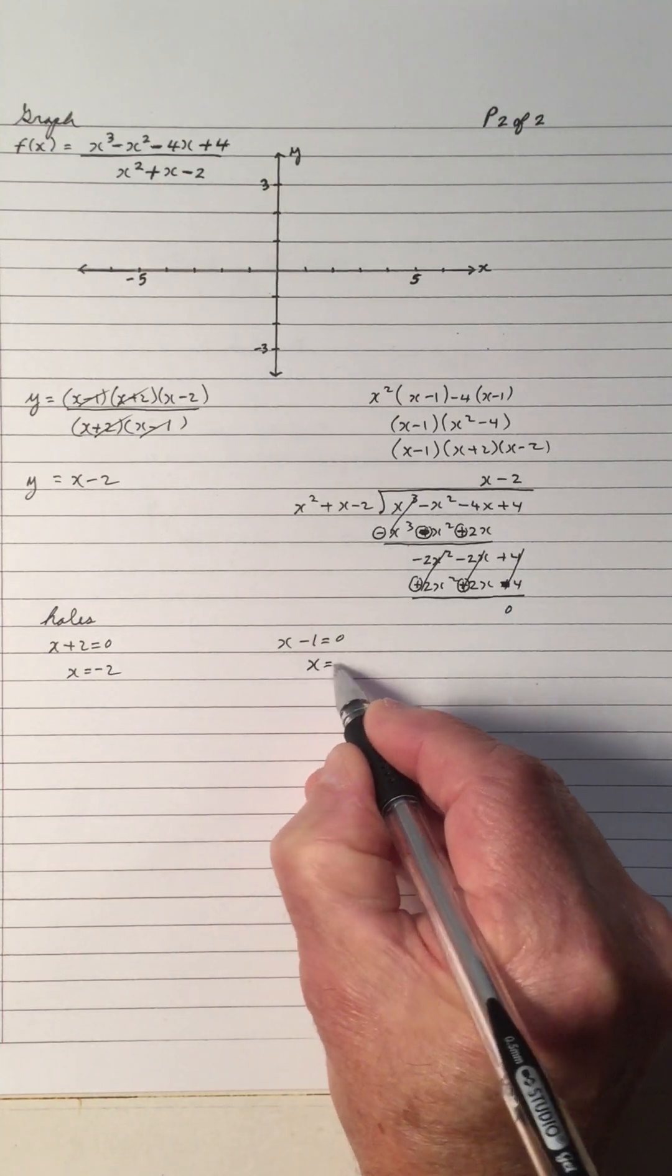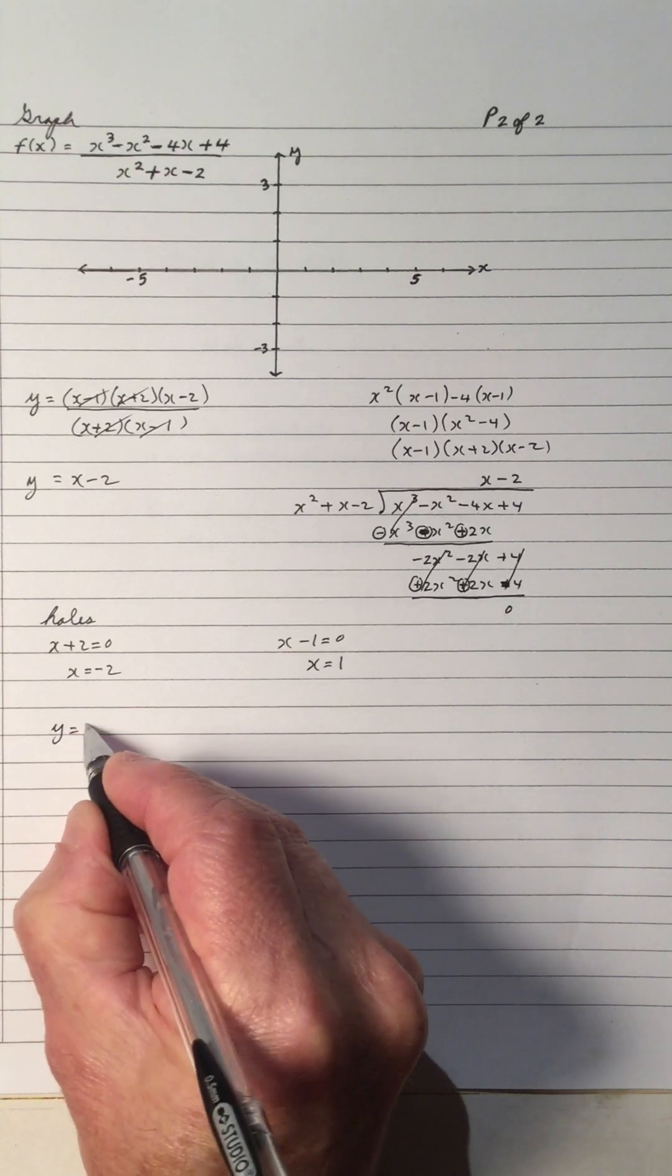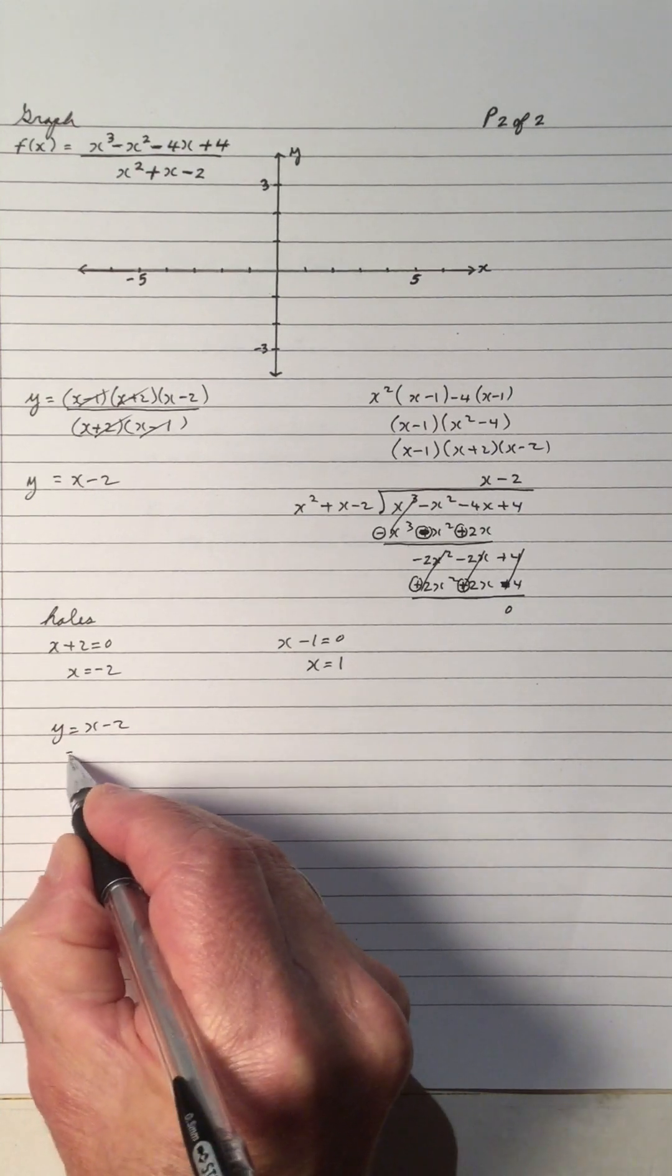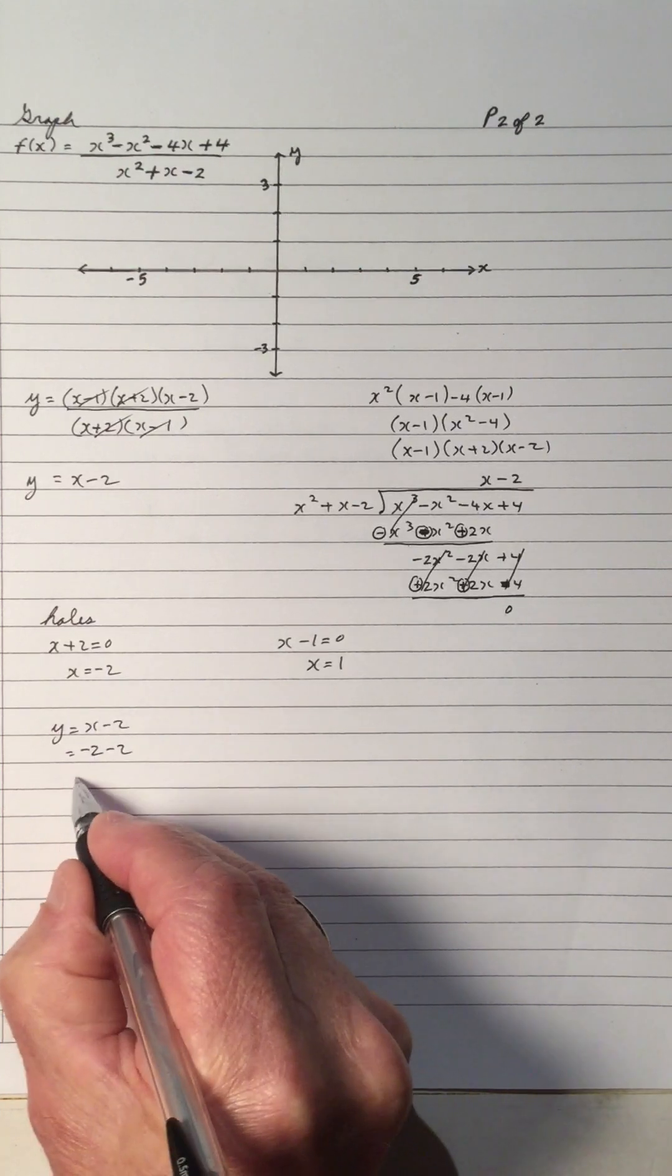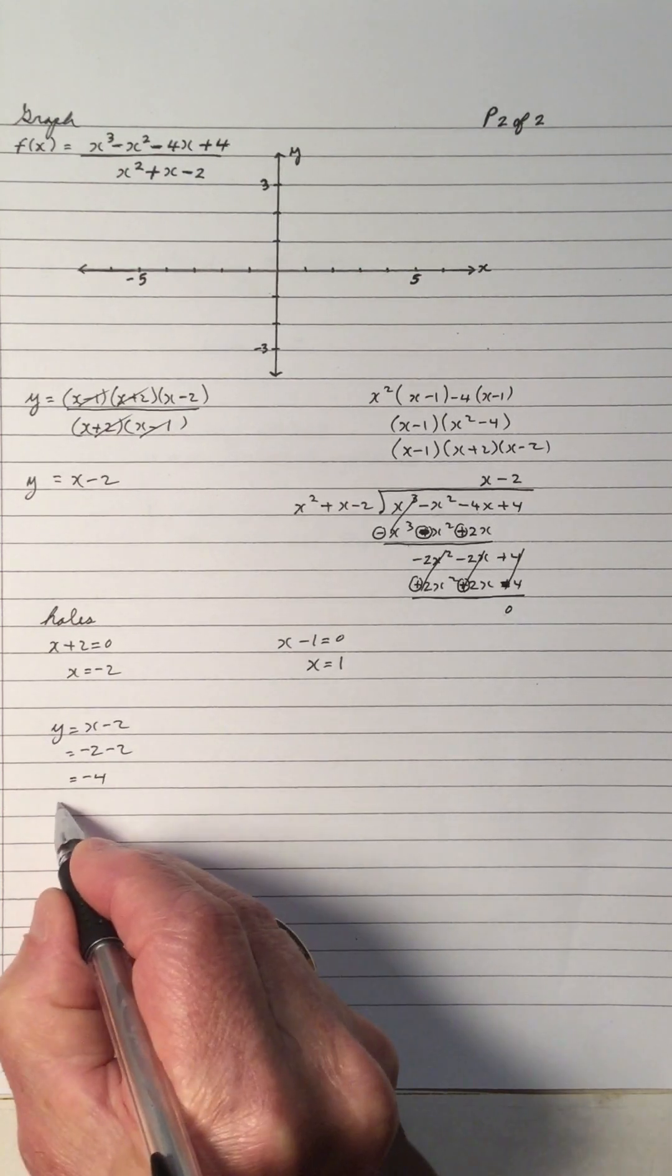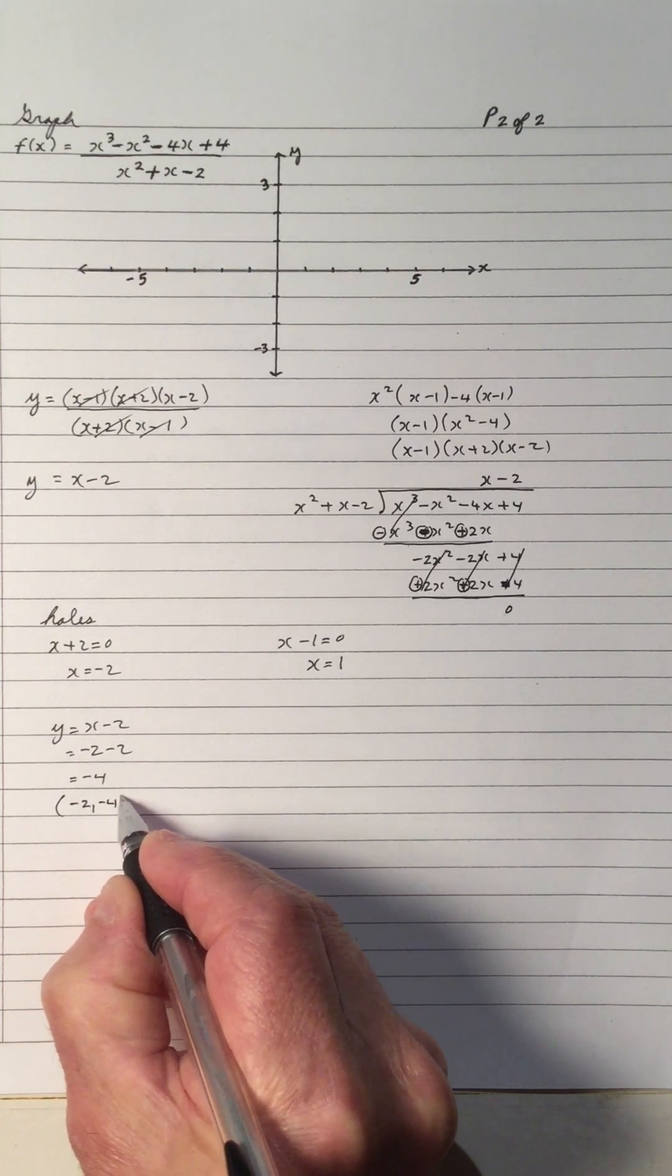So there's a hole at the x-coordinate of negative 2, and there's a hole at the x-coordinate of 1. So we take the equation y equals x minus 2, and we plug in the negative 2 for x, and get negative 4. So there's a hole at negative 2, negative 4.